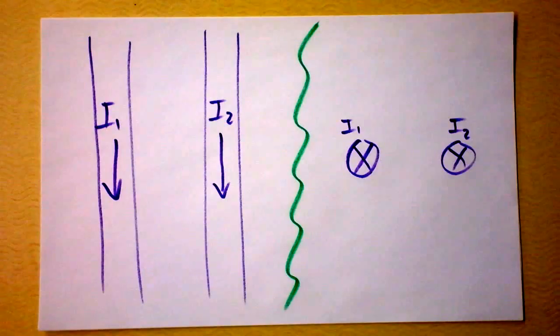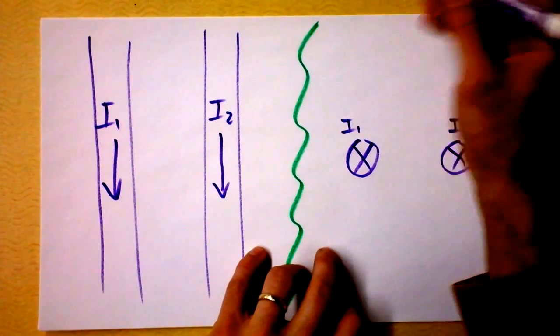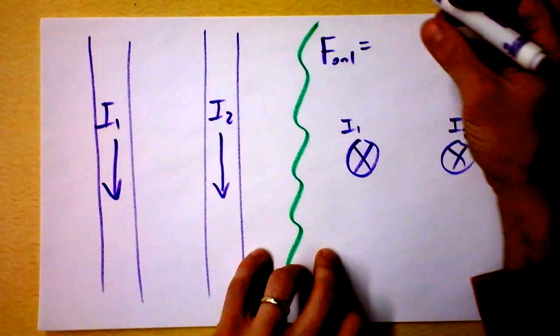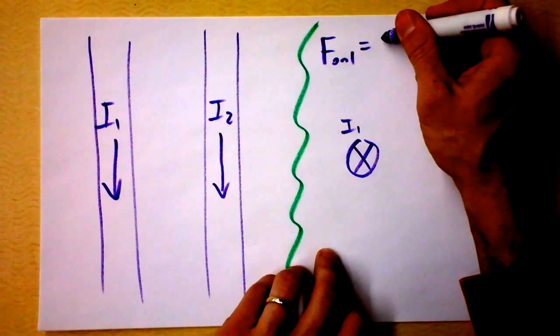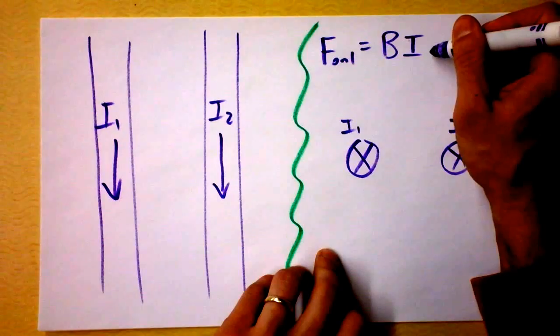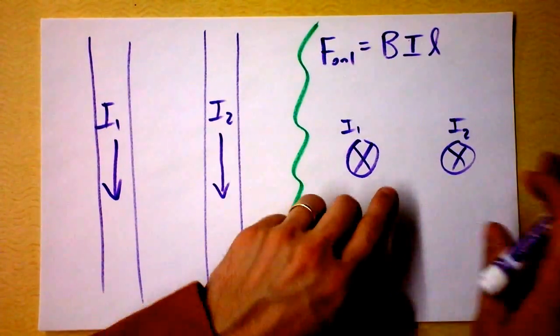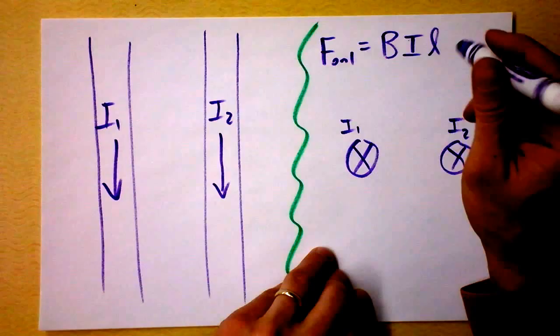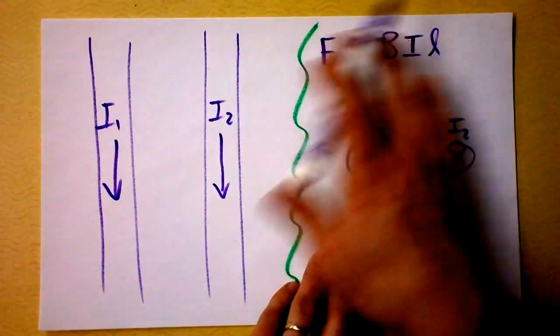We know two things already and all we have to do is combine them. First of all, the force on 1 is going to be BIL, right? So it's B times I times L, and they're properly oriented so that this force is going to be maximal, and I'm just going to figure out how big it is, not the direction that it points.